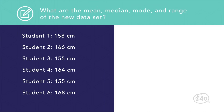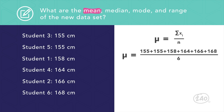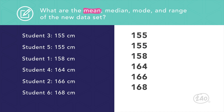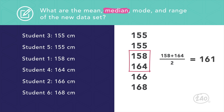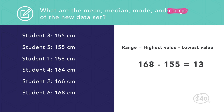What happens when a new student joins the group? The data set is now 158, 166, 155, 164, 155, 168. Rearranged: 155, 155, 158, 164, 166, 168. The mean is now the sum divided by 6, giving a mean of 161. The median has changed since we now have an even number of students — we add the two middle values, 158 and 164, then divide by 2, giving a median of 161. The mode is still 155. The range stays 13, since the highest and lowest measurements haven't changed.